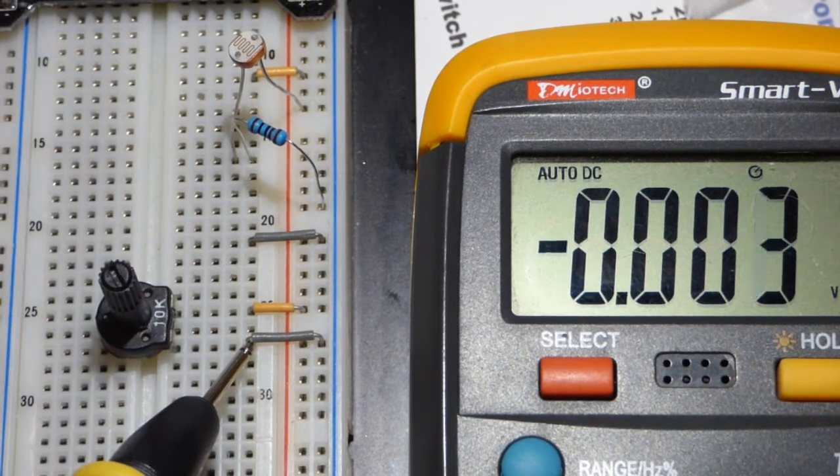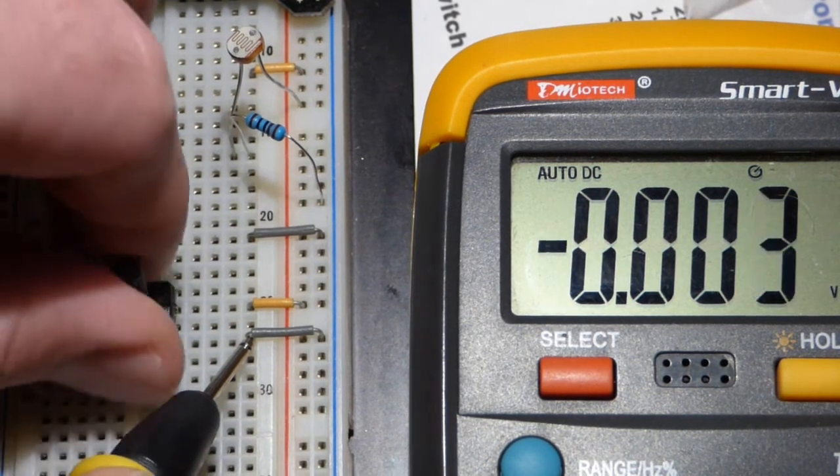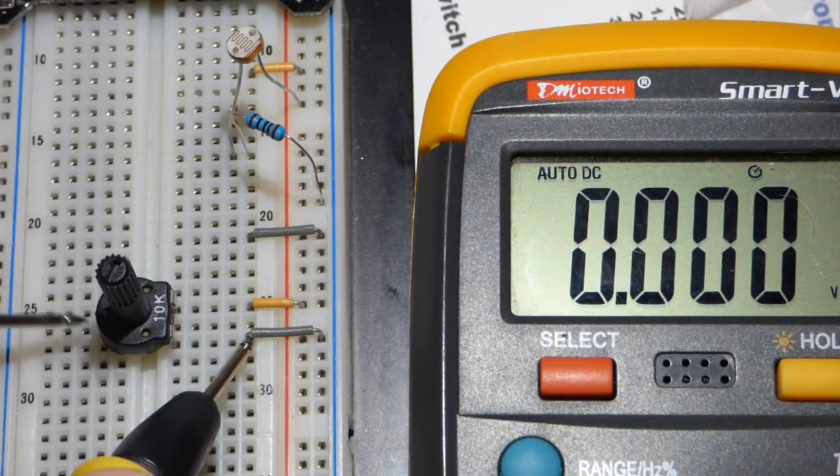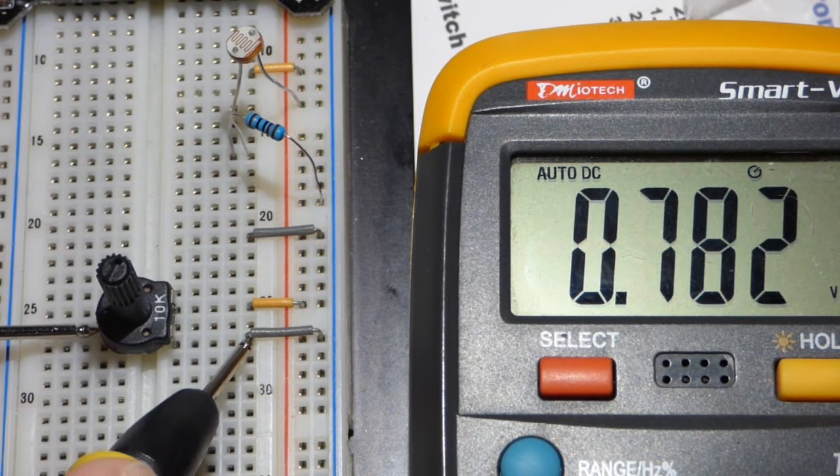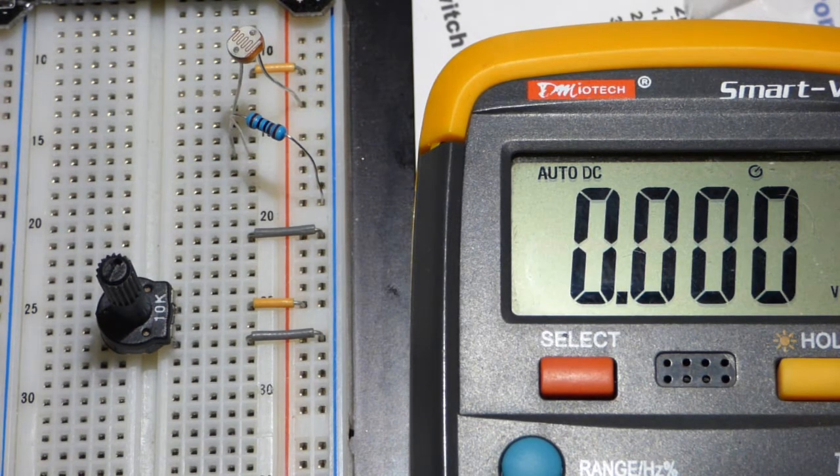So we can go the other way. We can go all the way down, so we'll have about zero there. And go up just a little bit. About 0.8 volts there. So that's what the voltage divider is.